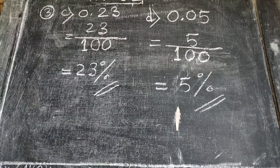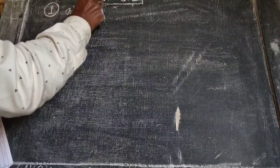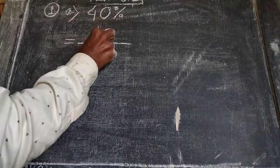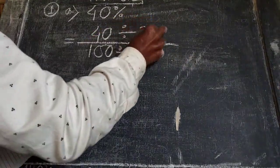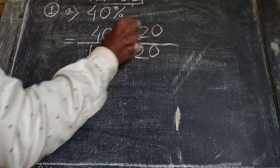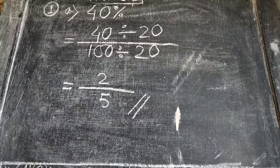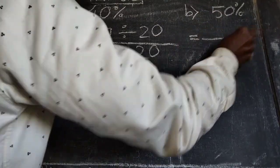Next, Exercise 6.3, Question 1: Express each percentage as a fraction in its simplest form. (a) 40 percent — we write 40 by 100. Dividing both by 20: 40 divided by 20 is 2, and 100 divided by 20 is 5. So the fraction is 2 by 5.